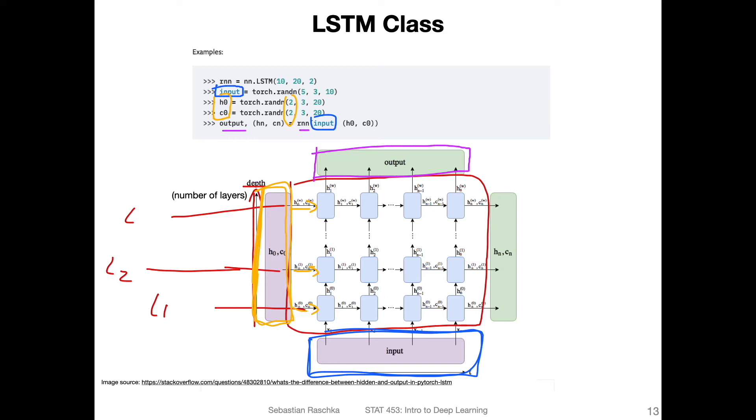In addition to that, it also returns here the hidden state and cell state for the last time step. So technically what we could do is we could have, let's say, another RNN call with some input sequence together - so like we had it here, together with these Hn and Cn - if we wanted to, for example, if we want to reuse that part.